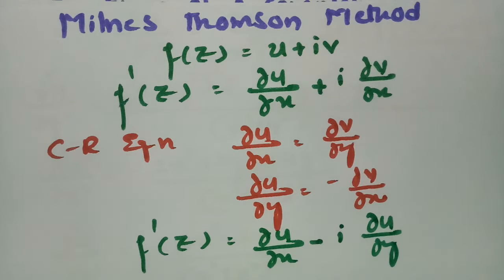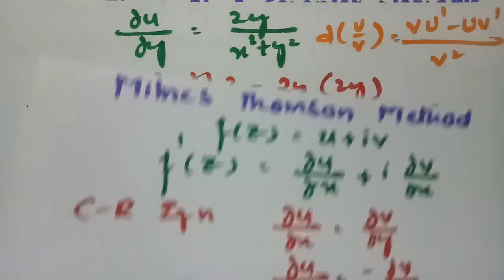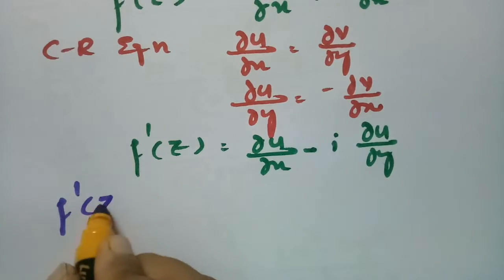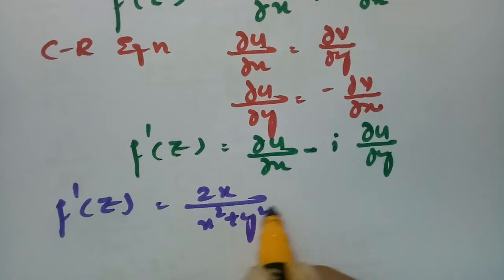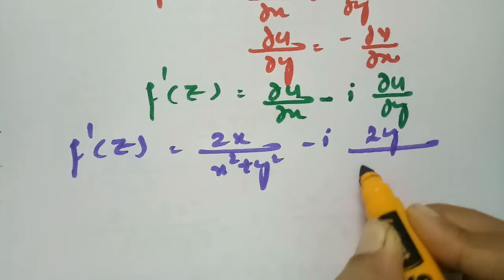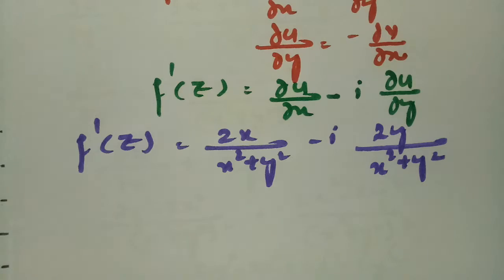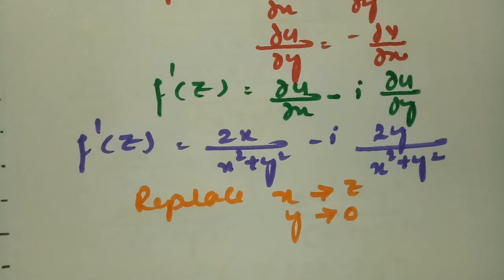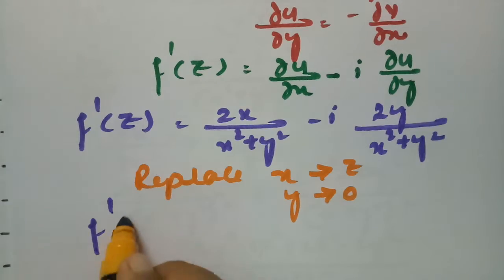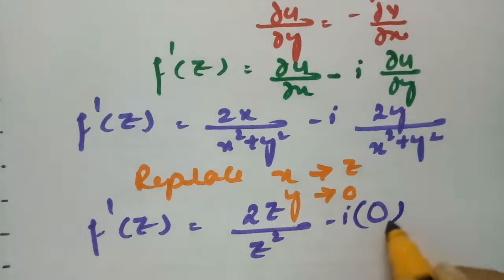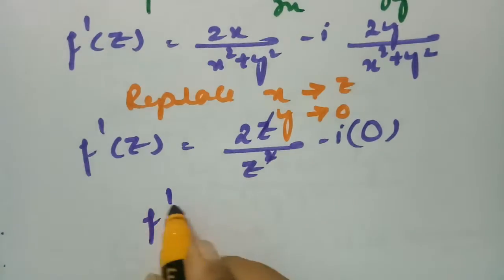Therefore f'(z) = ∂u/∂x - i·∂u/∂y. Both values are ready: ∂u/∂x = 2x/(x² + y²) and ∂u/∂y = 2y/(x² + y²). So f'(z) = 2x/(x² + y²) - i·2y/(x² + y²). Now according to the Milne-Thomson method, we replace x by z and y by 0, giving f'(z) = 2z/z² - i·0 = 2z/z².